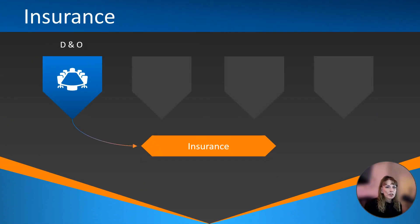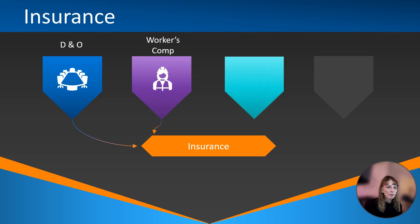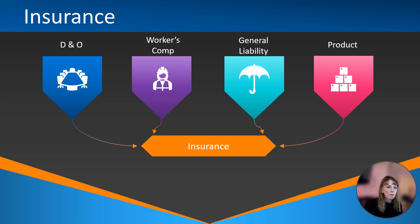Briefly about insurance: be sure to research what type of insurance you may need for your business. Here are some of the more important types of insurance that should be considered. Depending upon the services you provide, you may need additional coverage — for example, if you're providing professional services, you may need errors and omissions insurance coverage over and above your normal insurance policies.